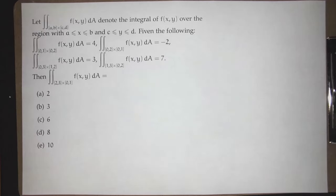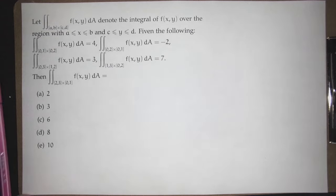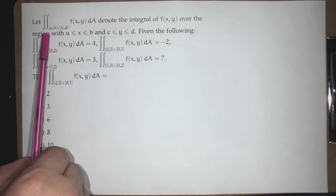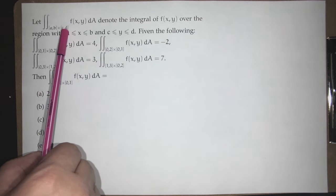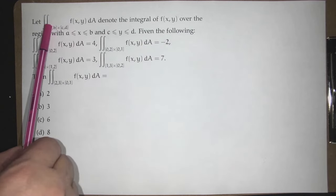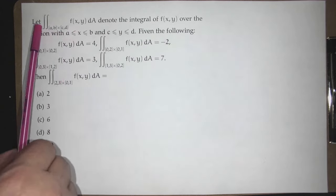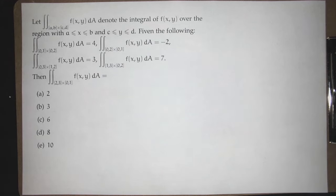We have our warm-up problem. We started talking about integration last time. We don't know very much, so what does the problem ask? It says suppose you have this notation where you're describing your region as two intervals being combined. This indicates x goes from A to B, y goes from C to D — in other words, it's a rectangle.